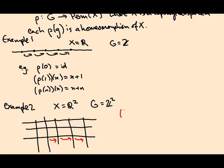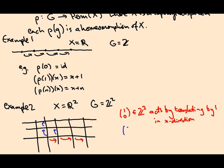Maybe there's one set of translations that do this. So this is the action of the element (1,0) in Z². This acts by translating by 1 in the x direction. And then there's another translation in the y direction and any combination of them lives in the group.